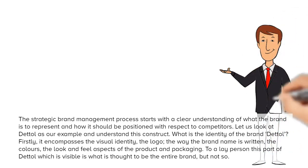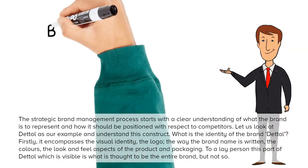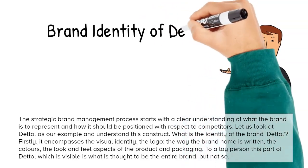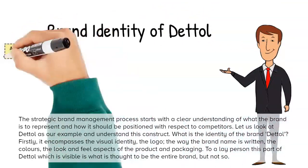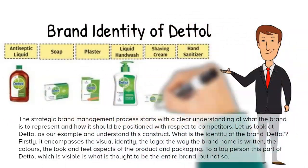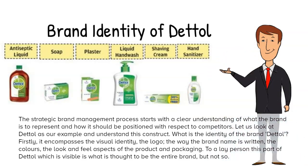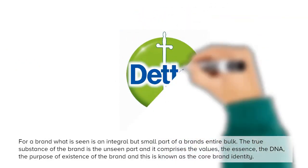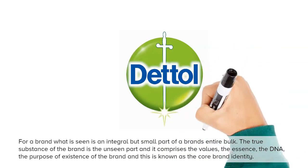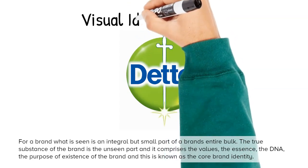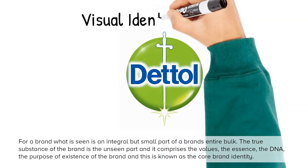Let us continue looking at Dettol as our example and understand these two constructs. Firstly, it encompasses the visual identity — the logo, the way the brand name is written, the colors, the look and feel aspects of the product and packaging. To a layperson, this visible part of Dettol is what is thought to be the entire brand. But for a brand, what is seen is an integral but small part of a brand's entire bulk.